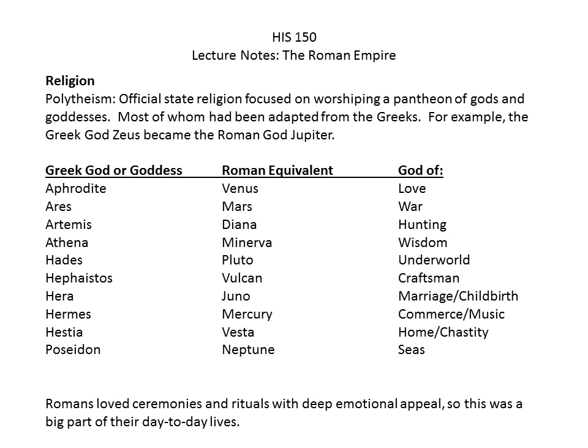Rome had a polytheistic religion — many gods and goddesses — most adapted directly from the Greeks. For example, the Greek god Zeus became the Roman god Jupiter. Religion was seen as a quid pro quo: keep the gods happy and they'll be nice to us. Romans loved ceremonies and rituals, which was a big part of day-to-day life and another way to distract people from what was actually going on in the empire.